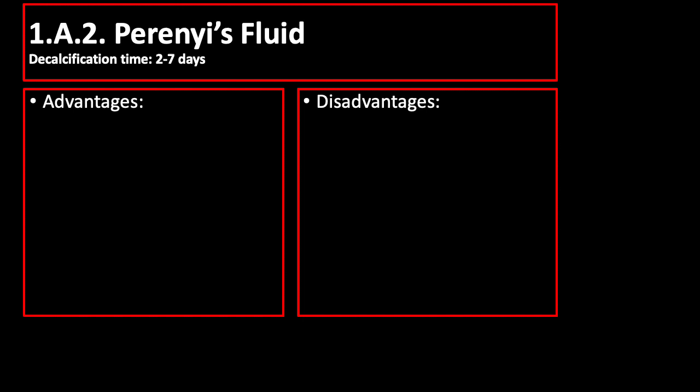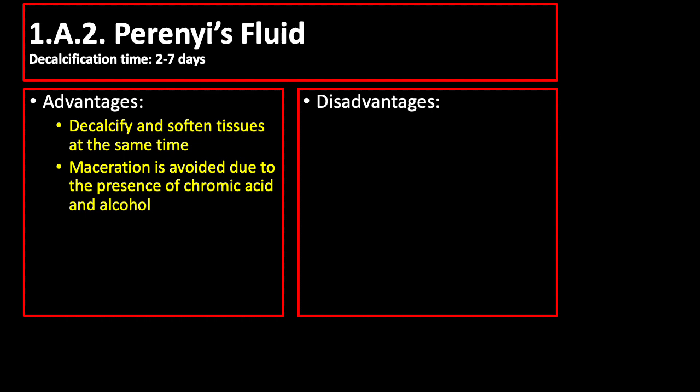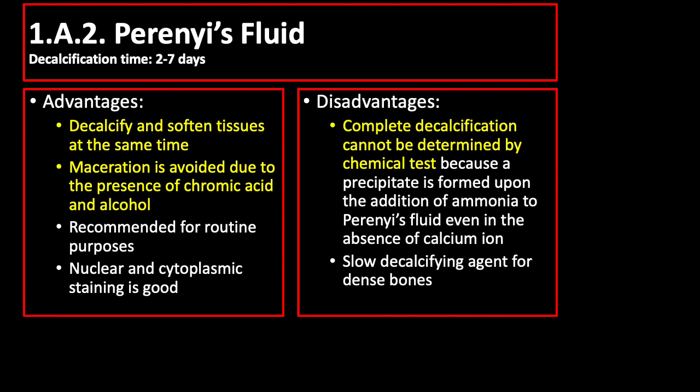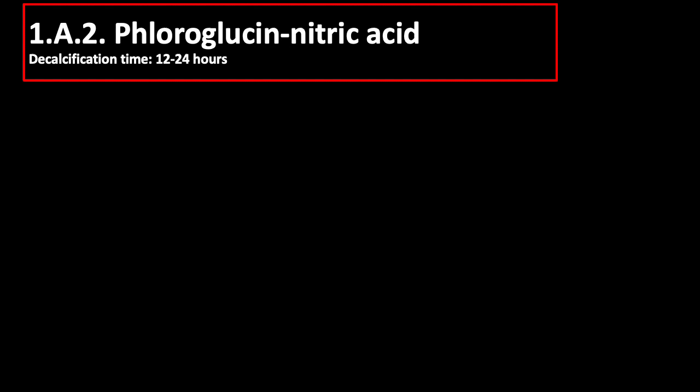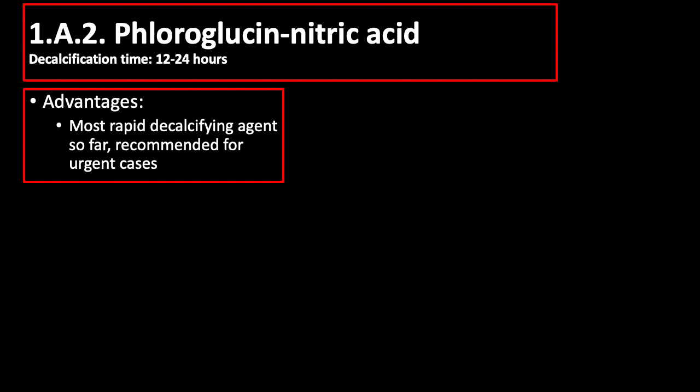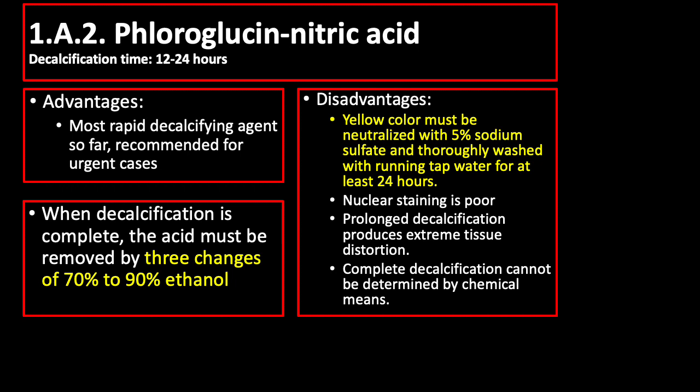Perineous fluid has a decalcification time of 2 to 7 days. It is both a decalcifying agent and softening agent, and maceration is avoided due to the presence of chromic acid and alcohol. However, complete decalcification cannot be determined by chemical testing. Fluoroglucine nitric acid has a decalcification time of 12 to 24 hours. When decalcification is complete, the acid must be removed by three changes of 70 to 90% ethanol to completely remove the decalcifying agent, thus preventing reaction with chemicals used in succeeding histopathologic processes.